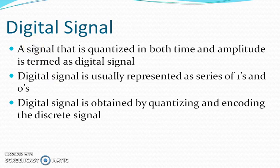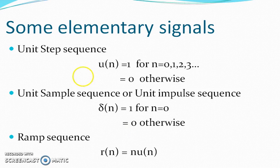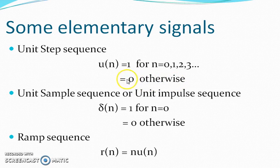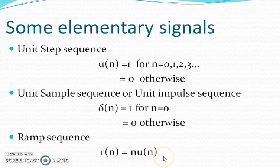Next, digital signal. A digital signal is quantized in both time and amplitude and is usually represented as a series of ones and zeros. Digital signals are obtained by quantizing and then encoding a discrete time signal. We also need elementary signals to analyze systems: the unit step sequence, the unit sample sequence or unit impulse sequence — represented as δ(n) = 1 for n = 0 and 0 otherwise — and the ramp sequence, which is a linear function given by r(n) = n · u(n).